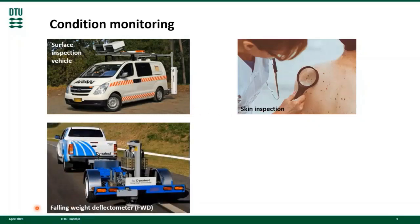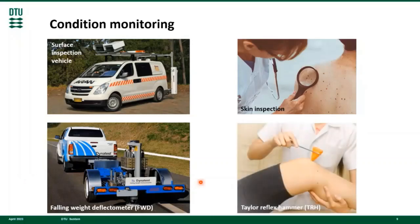Pavements are often tested with the FWD, the Falling Weight Deflectometer. The device applies an impulse load that strikes the surface and triggers a brief mechanical response. The test targets deep structural behavior and the recorded responses are important for assessing the integrity of the pavement system. Humans are often tested with a Taylor Reflex Hammer. An impulse load is applied striking the skin and triggering a brief reflex response. The Taylor Hammer targets the behavior of deep tendon reflexes and the observed response is important in assessing the integrity of the nervous system.